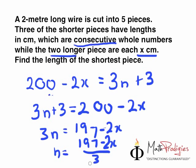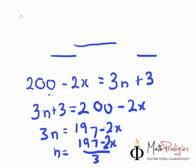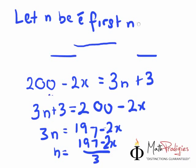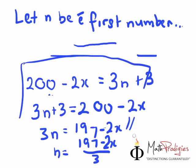Alright? So in this type of questions, the most important part is you must, must, must, must, must, you must let n be the first number. And then you must let the next number be n plus 1, n plus 2. And then you get this and you get the answer and you get your marks.